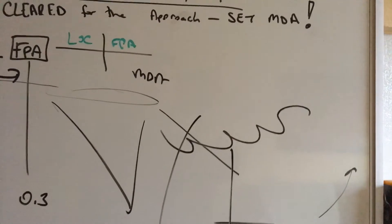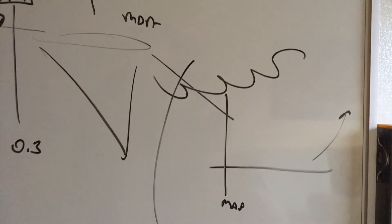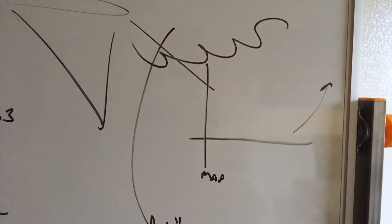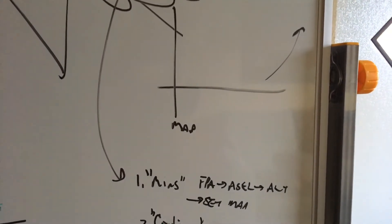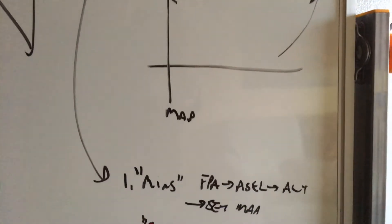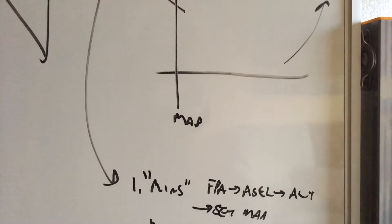There's two possible outcomes on this approach. If you hear minimums, then allow your altitude to capture, set MDA altitude, fly to the missed approach point, and then go around at that point in time.